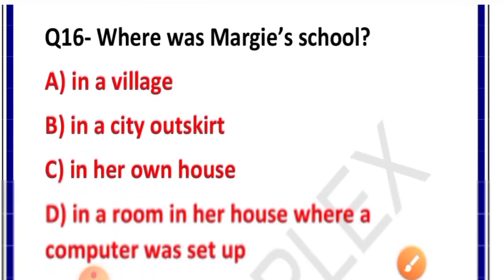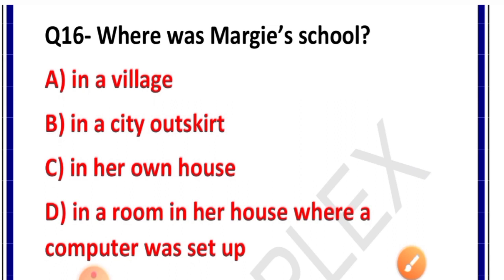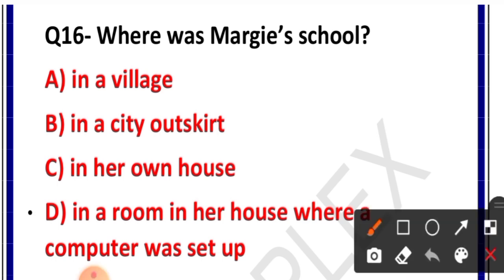Question number 16: Where was Margie's school? Options: in a village, in a city outskirt, in her own house, or in a room in her house where a computer was set up. Correct answer is option D — in a room in her house where a computer was set up.